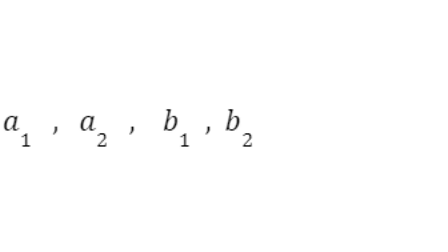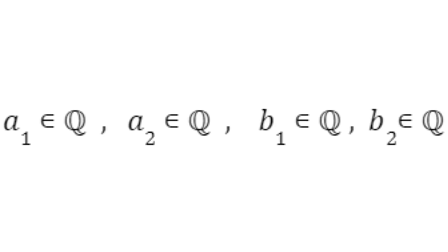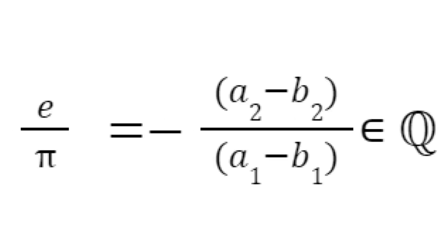And since a1, a2, b1, and b2 are all rational, we conclude that e over pi is rational.